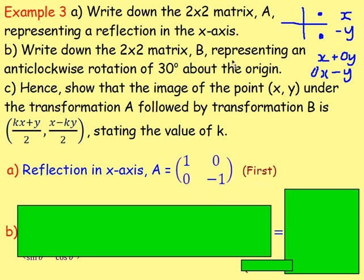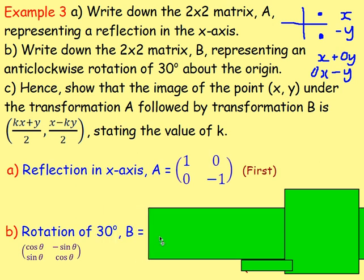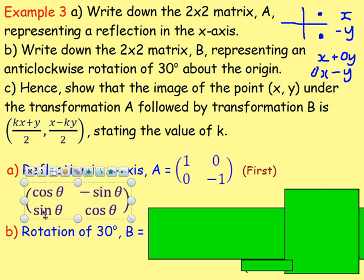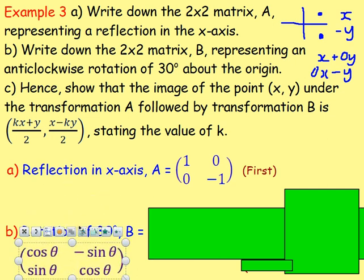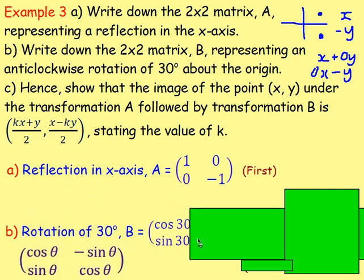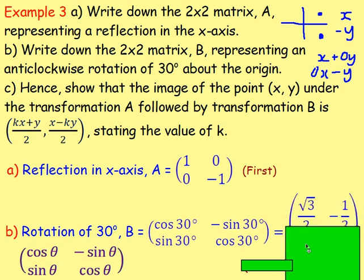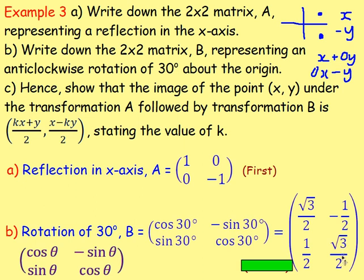Part B: write down the 2×2 matrix B representing an anti-clockwise rotation of 30° about the origin. Rotations about the origin must be anti-clockwise, which this one is. Using the rotation matrix [cos θ, −sin θ; sin θ, cos θ] with θ = 30°: cos 30° = √3/2, −sin 30° = −1/2, sin 30° = 1/2, cos 30° = √3/2. So matrix B = [√3/2, −1/2; 1/2, √3/2]. That is the second transformation.